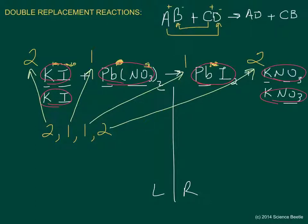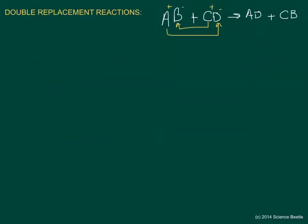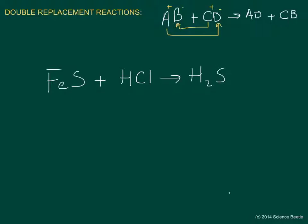That's the first example — you can always rewind and watch it again as many times as you need. Let me show you the second equation. I'll erase the board and start with a new screen. This second equation involves iron sulfide, FeS, reacted with hydrochloric acid, HCl. This is going to give us H₂S, which is actually a gas, and we're also going to get iron chloride, FeCl₂. This is a double replacement reaction.